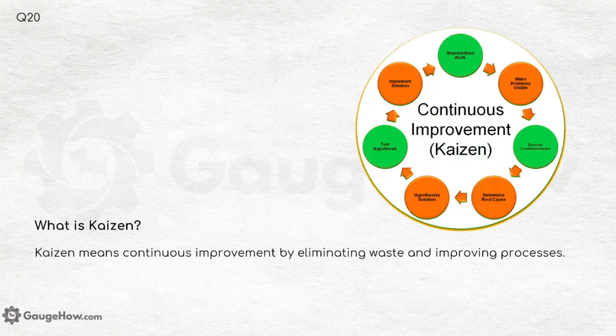What is Kaizen? Kaizen is a Japanese philosophy which means continuous improvement by eliminating waste and improving processes.